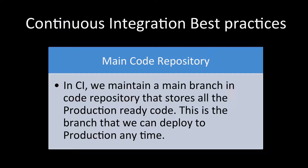Then we have the main code repository. This is the main branch, and this branch will always contain code that is production-ready, meaning you can always deploy from this branch. This is the most important branch in CI — it is the branch where we are integrating our code.